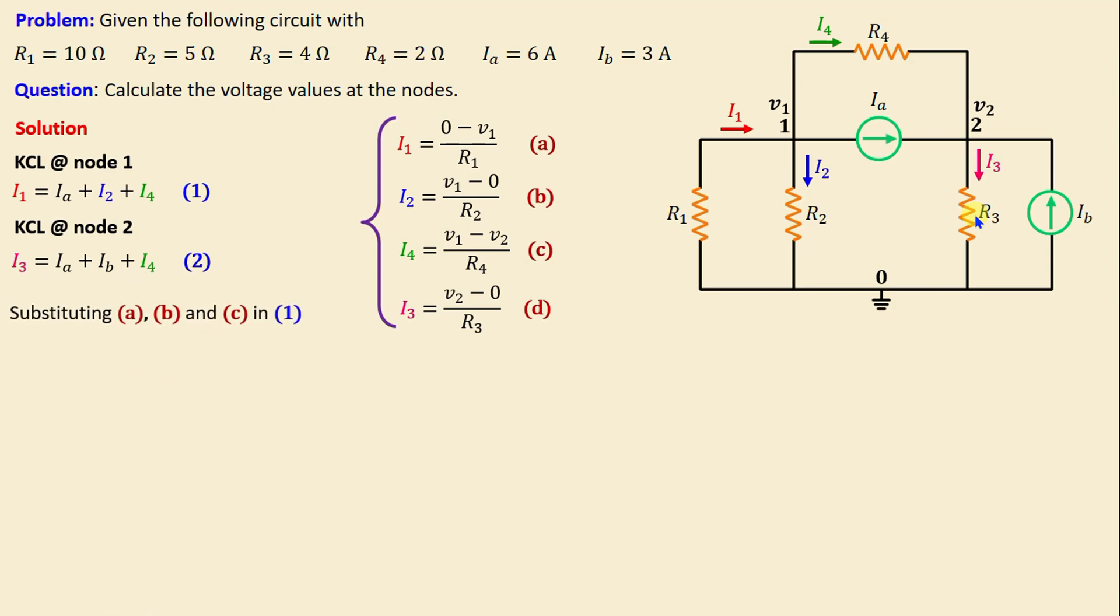By substituting equations (a), (b), and (c) into equation (1), we can write: -V1/R1 = Ia + V1/R2 + (V1 - V2)/R4. By replacing the resistors and the current with their numerical values, we obtain: -V1/10 = 6 + V1/5 + (V1 - V2)/2. If we combine all terms and simplify, we obtain: 8V1 - V1 - V2 + 60 = 0.